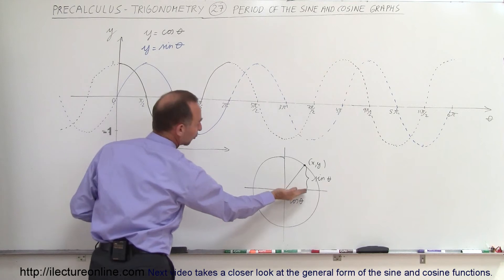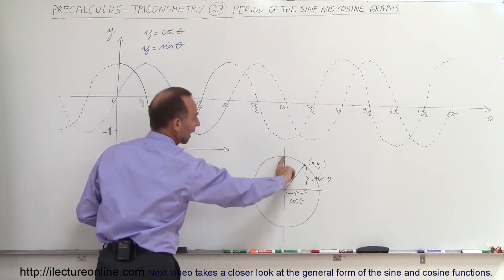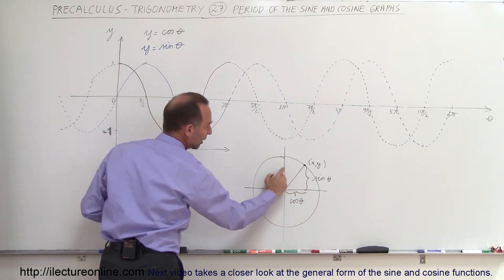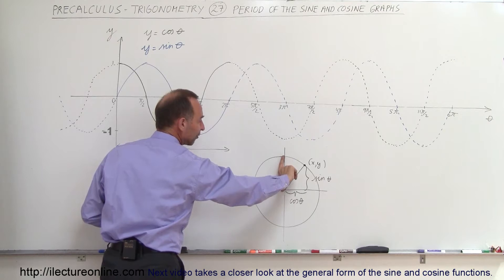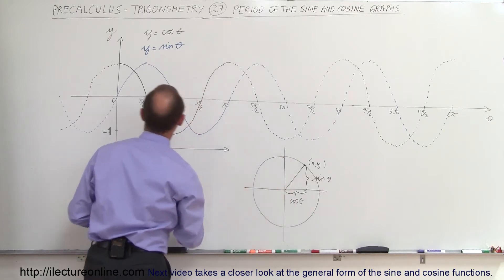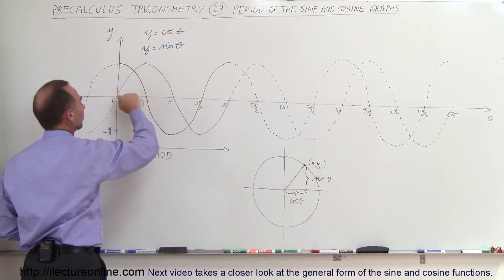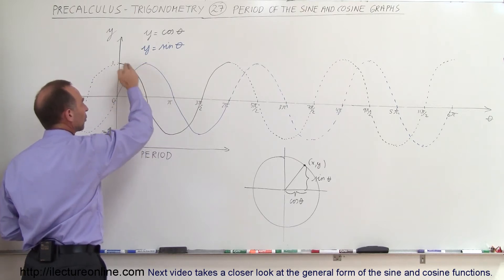When we get up to 90 degrees or pi over 2, at that point we can see that when the angle is 90 degrees then this would be the sine of theta and the cosine of theta would be equal to 0. So the cosine of theta comes to 0, the sine of theta goes to 1, and so forth.